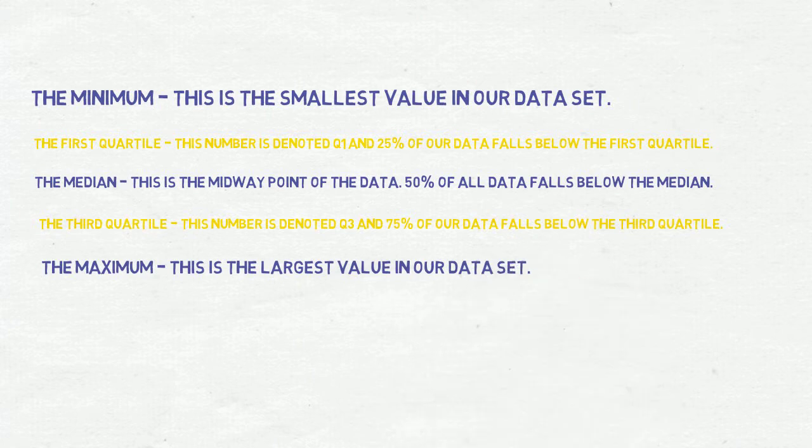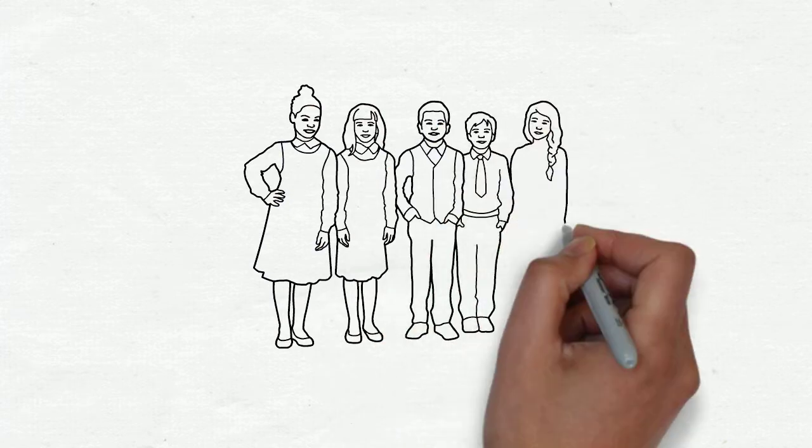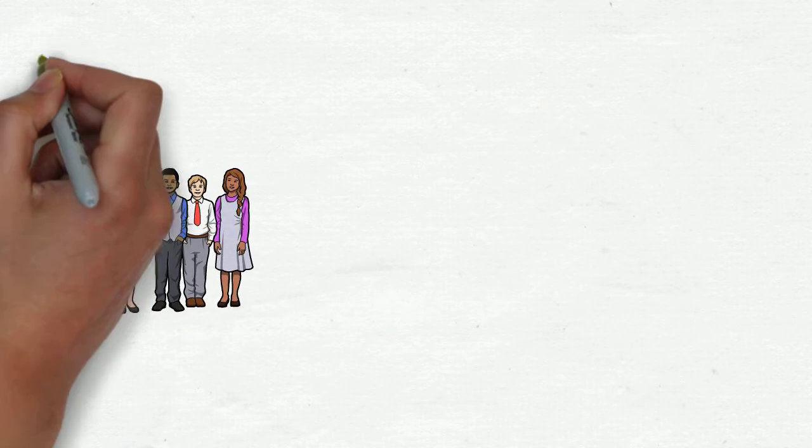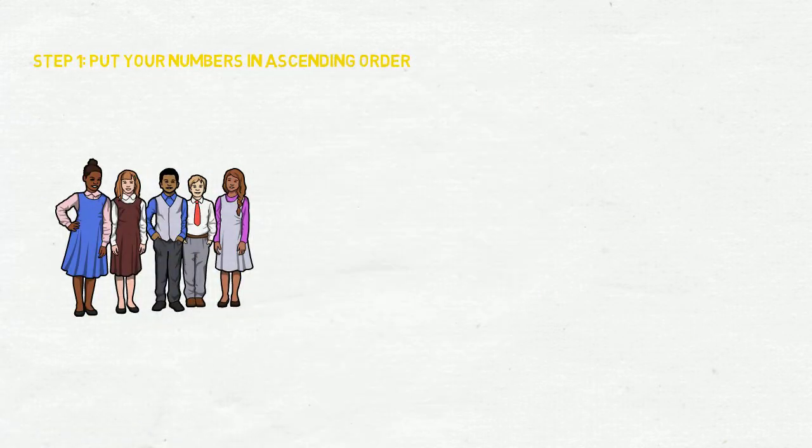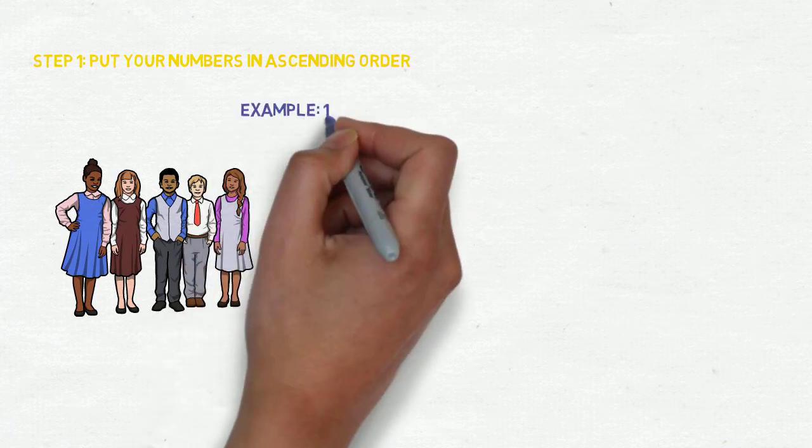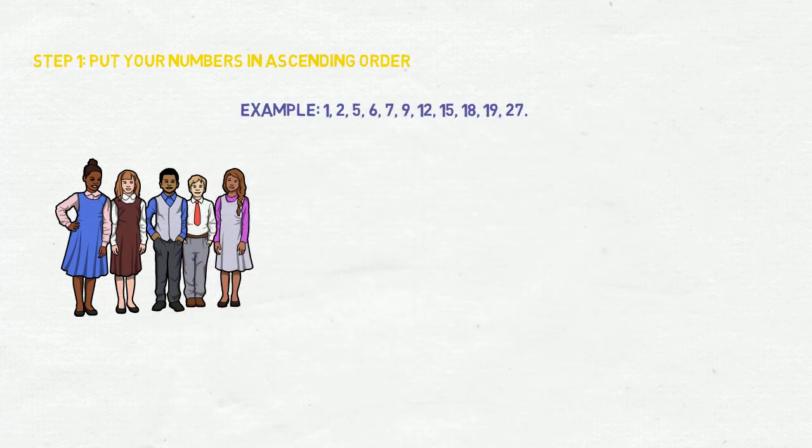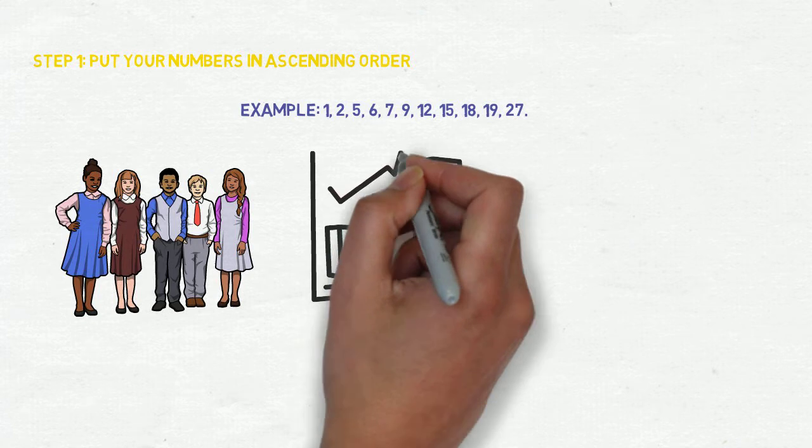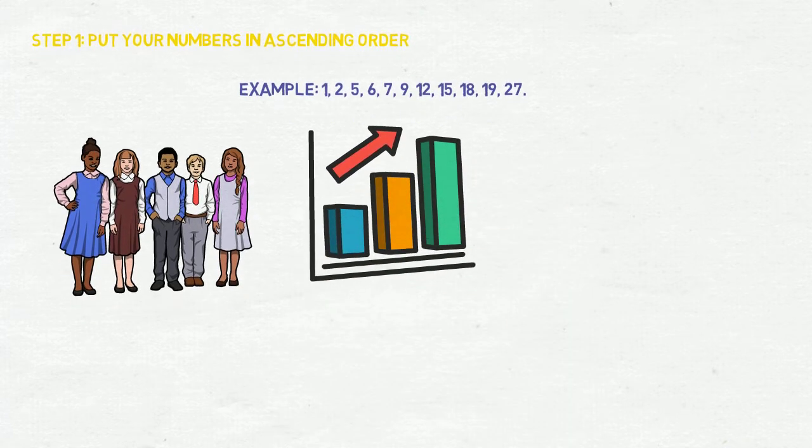Now let's see how to find the five-number summary with an example. Let's take a data set of student marks. Step 1: Put their marks in ascending order. For this particular data set, the order is 1, 2, 5, 6, 7, 9, 12, 15, 18, 18, 19, and 27. Step 2: Find the minimum and maximum for your data set. Since the numbers are in order, it is easy to spot that the minimum is 1 and the maximum is 27.